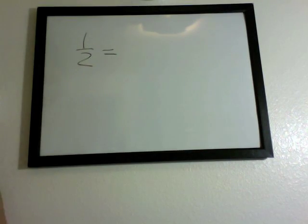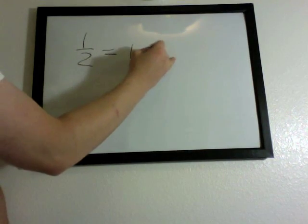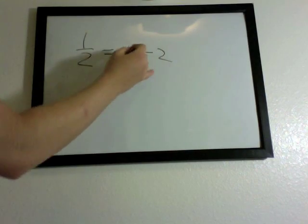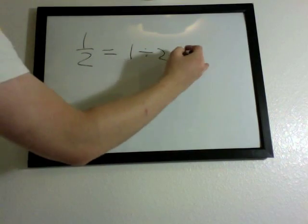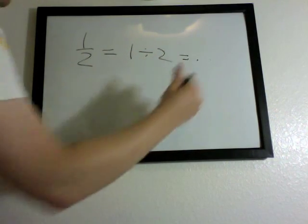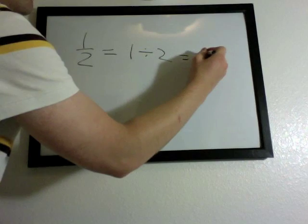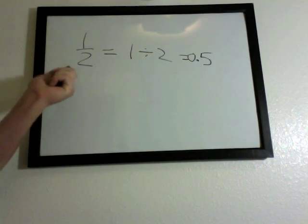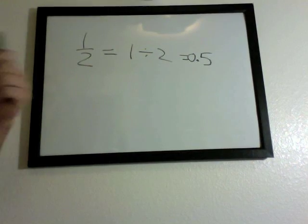You could also take this fraction one over two — this could also be written as one divided by two, which equals 0.5. You always take the top one, divide it by the bottom number, and you'll get a decimal that way.